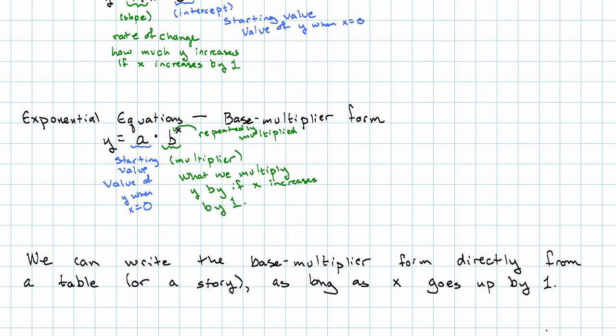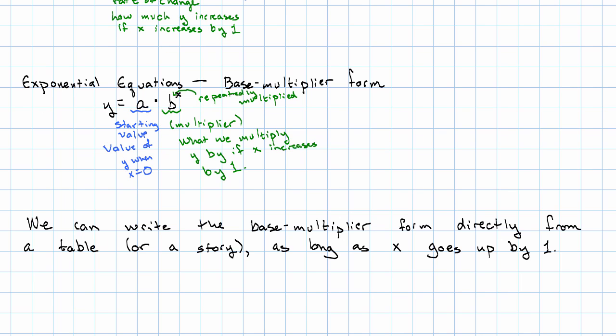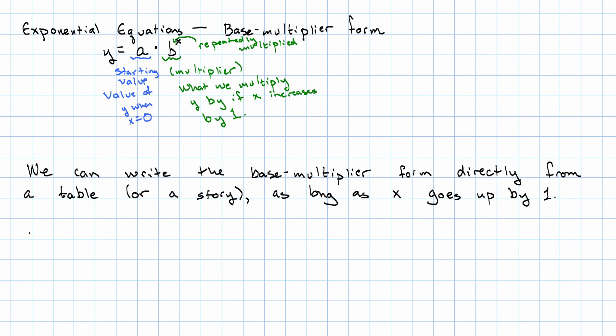We can write down the base multiplier form directly from a table or from a story that lets us write down a table, as long as we're looking at the multiplier when x goes up by one.